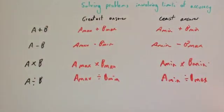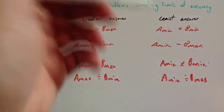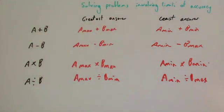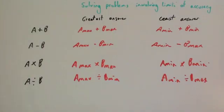I don't actually sit down and learn these as such. I just look at the numbers involved in the question. I write the upper bound and lower bound for each of the different numbers, and then work out what I would need to do. So let's have a look at some examples.